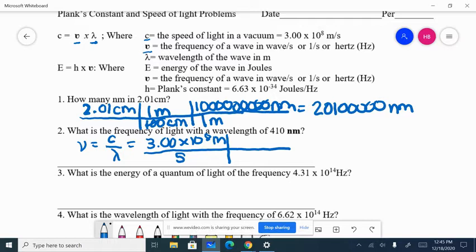And we're going to put wavelength on the bottom, which is 410 nanometers. Now, I can't cancel out meters with nanometers, but I can put nanometers up here and meters on the bottom. So 1 meter is 1 times 10 to the 9th nanometers.